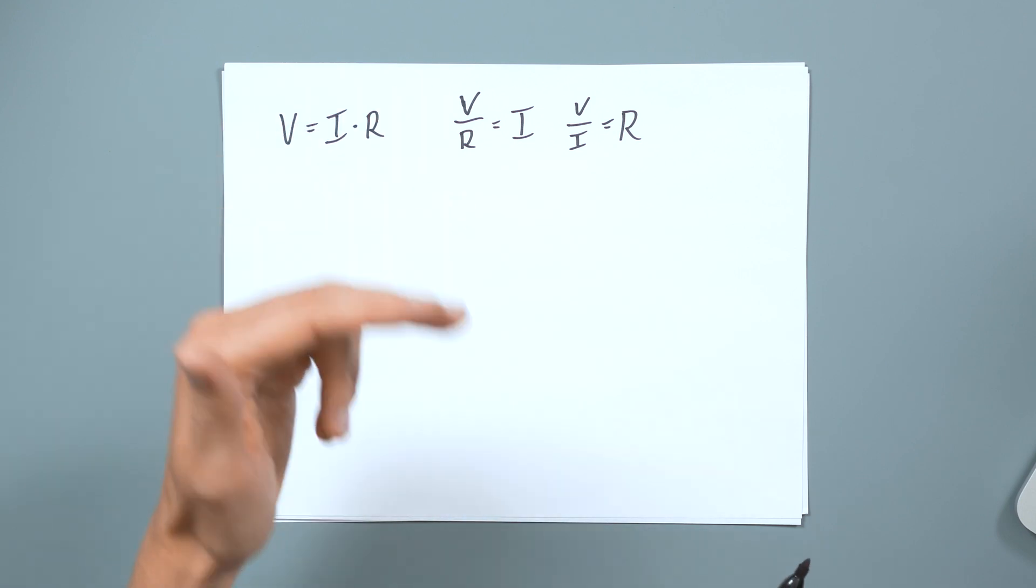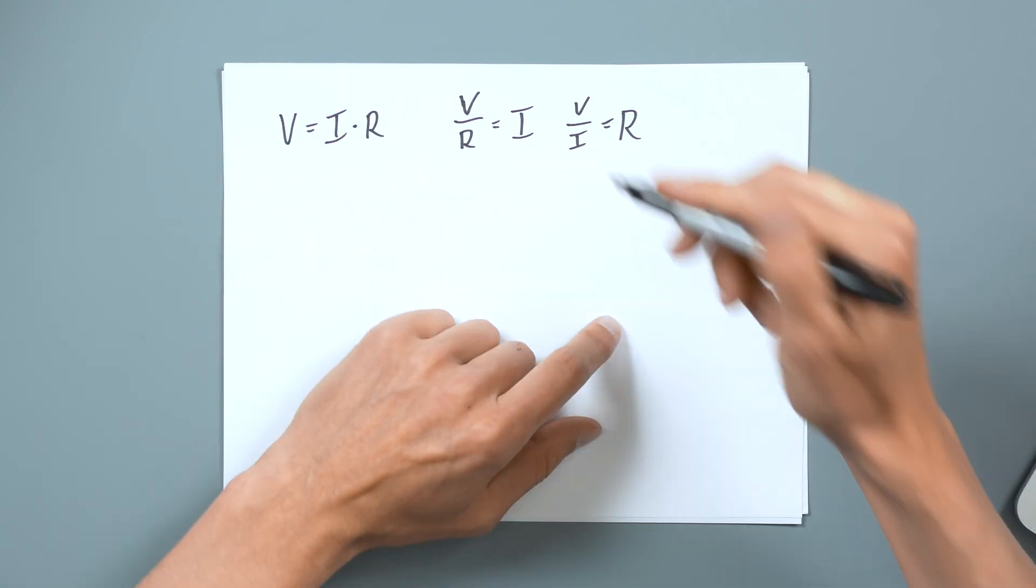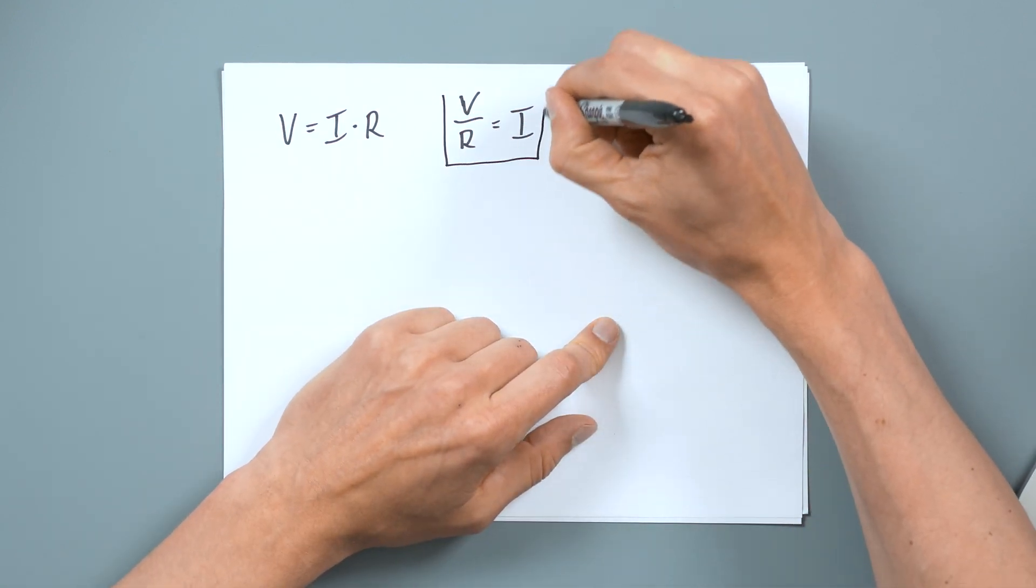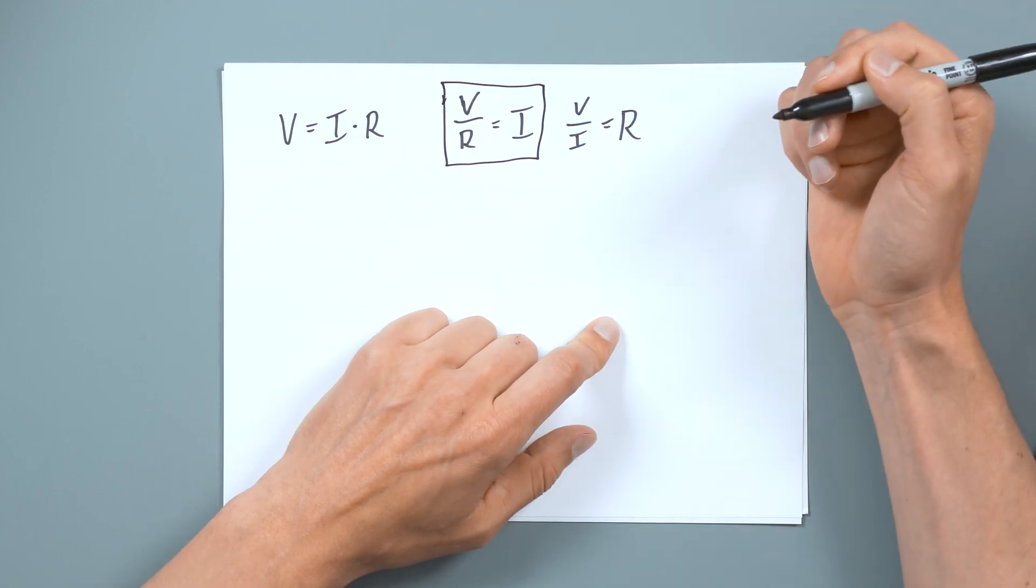So voltage over resistance equals current, this is so huge, it's going to be used in basically everything, every circuits class from here until forever. And then a lot of the things in electrical engineering still refer to this even if it's not circuits related.